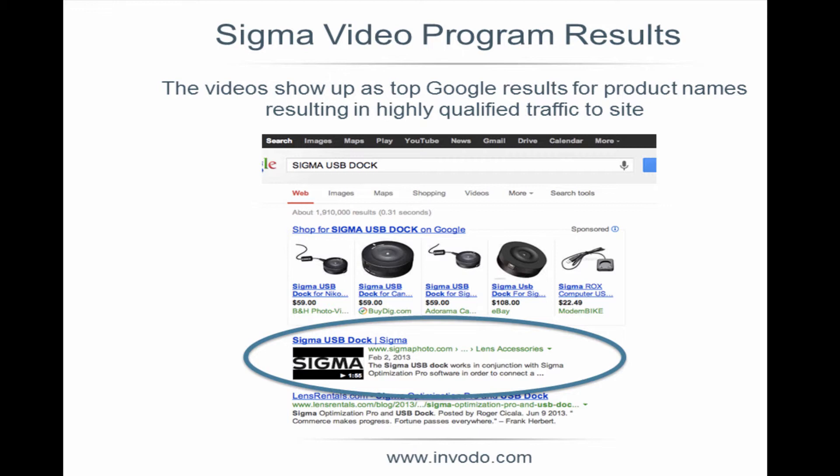One of the things we loved was having these videos embedded on the pages. Working with Envoto on keywording and including scripting in the video asset delivered fantastic search results. For the Sigma USB dock, searching for the title yields the top organic result, showing people we have a video on our site and driving them to our product page.